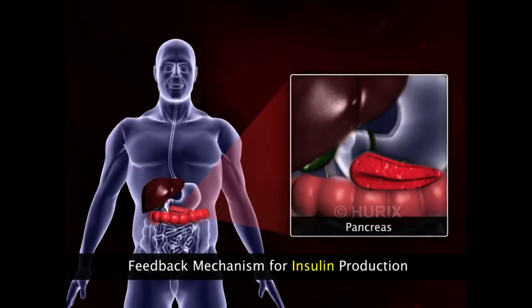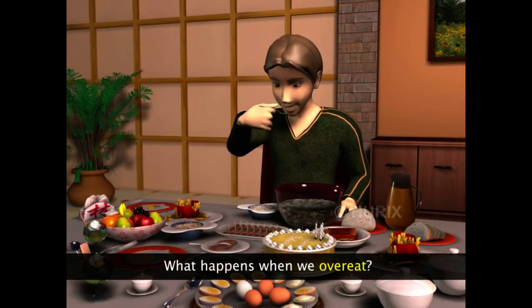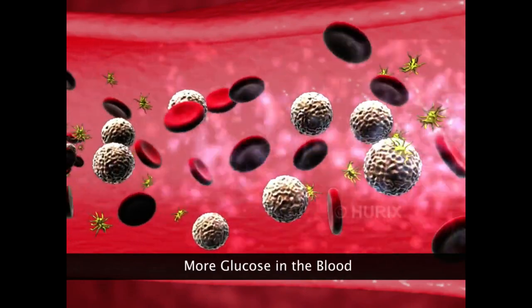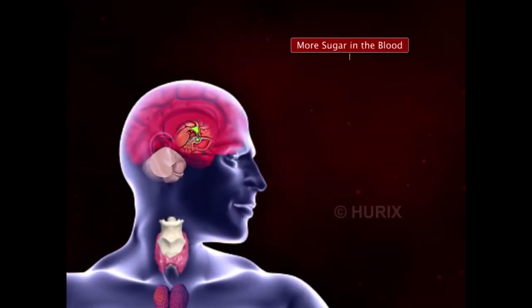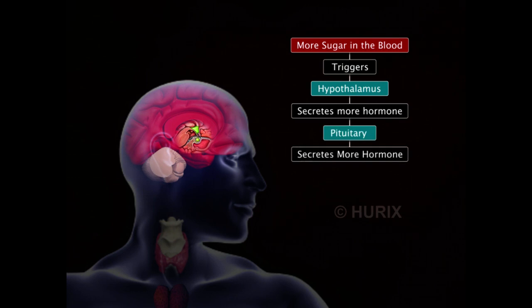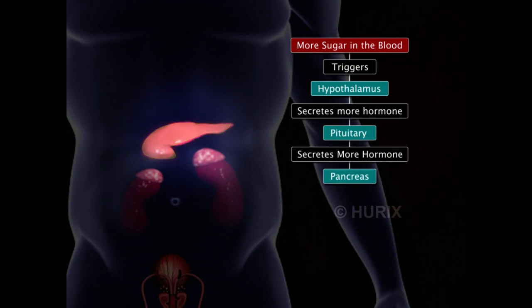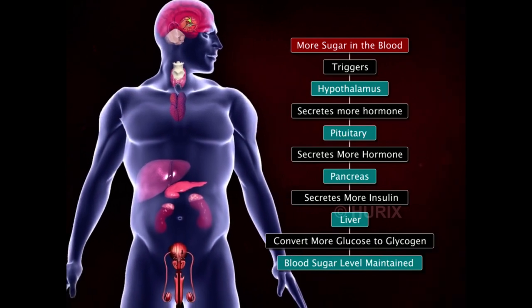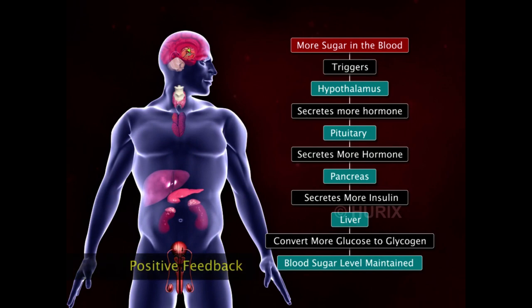Let us take the example of the feedback mechanism for insulin. Some days we tend to overeat, and as a result, during digestion, more glucose enters the blood. The hypothalamus senses the higher sugar level in the blood and sends a signal to the pituitary gland, which then signals the pancreas to secrete greater quantities of insulin. The target organ for insulin is the liver, where it helps in conversion of excess glucose to glycogen and releases only the right amount of glucose for the body. This is positive feedback.